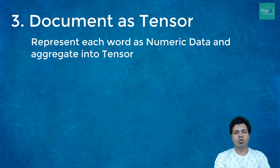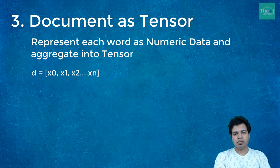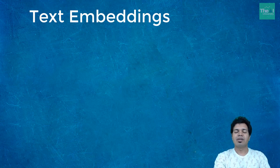The third step is document as tensor. Once you have the numeric encoding, you can represent a document as a tensor — a list of these encodings. Remember that every encoding has some numeric form, since neural networks can deal with numbers only. There are several algorithms and methods to represent words in numeric form; these are typically called text embeddings, a term I'll use for words in numeric form throughout the rest of the video.